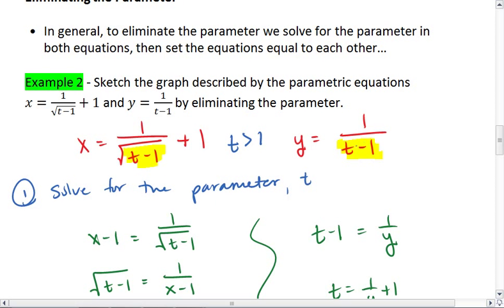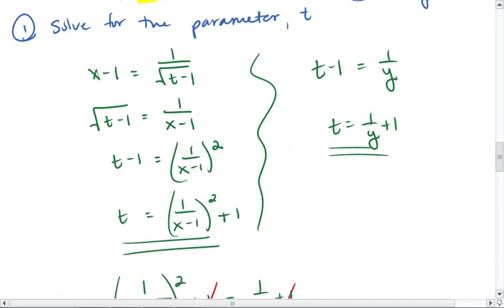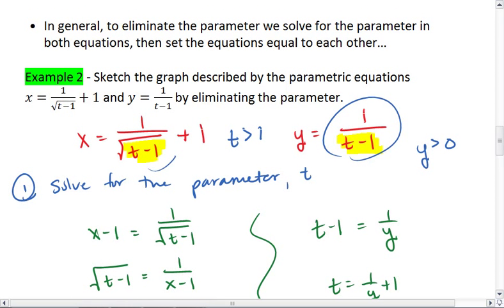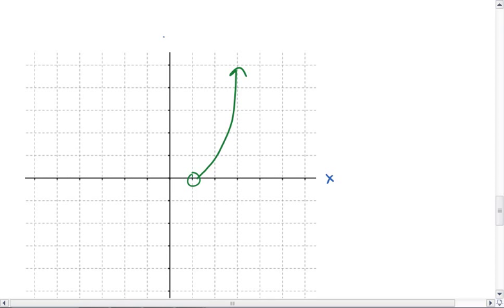If t is greater than 1, then that means that y has to be greater than 0, which is why our graph gets restricted. We also see that t is greater than 1, and then x is greater than 1 as well. And this is how we end up with this graph.